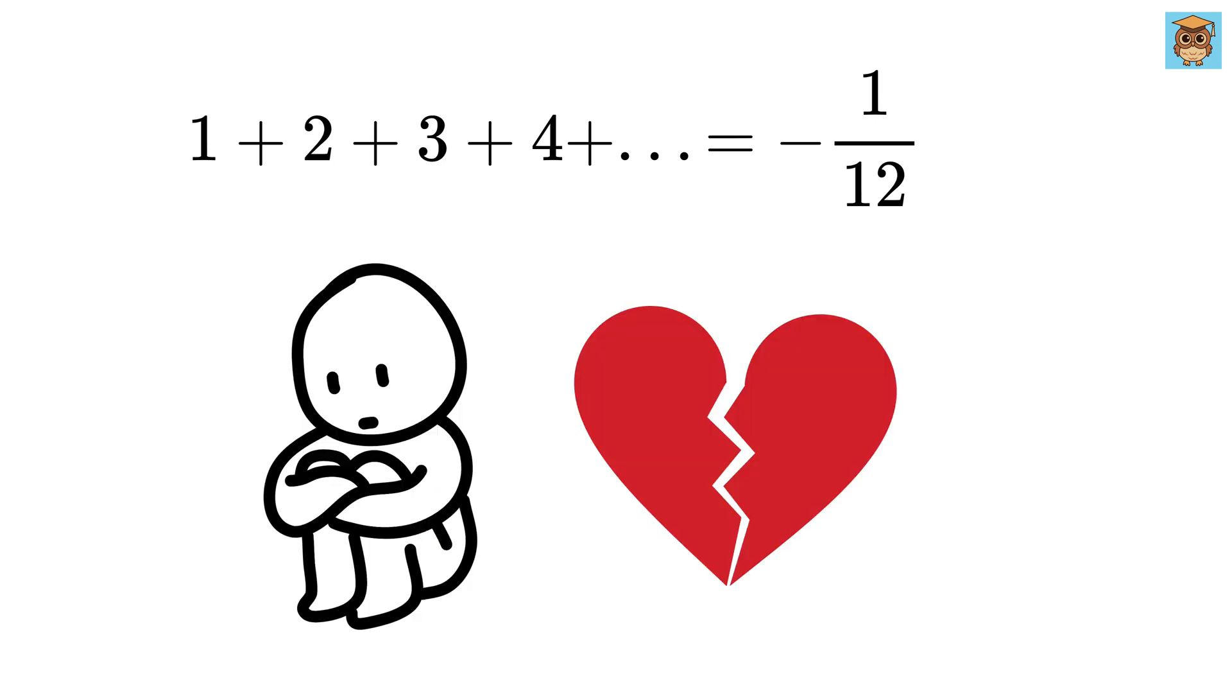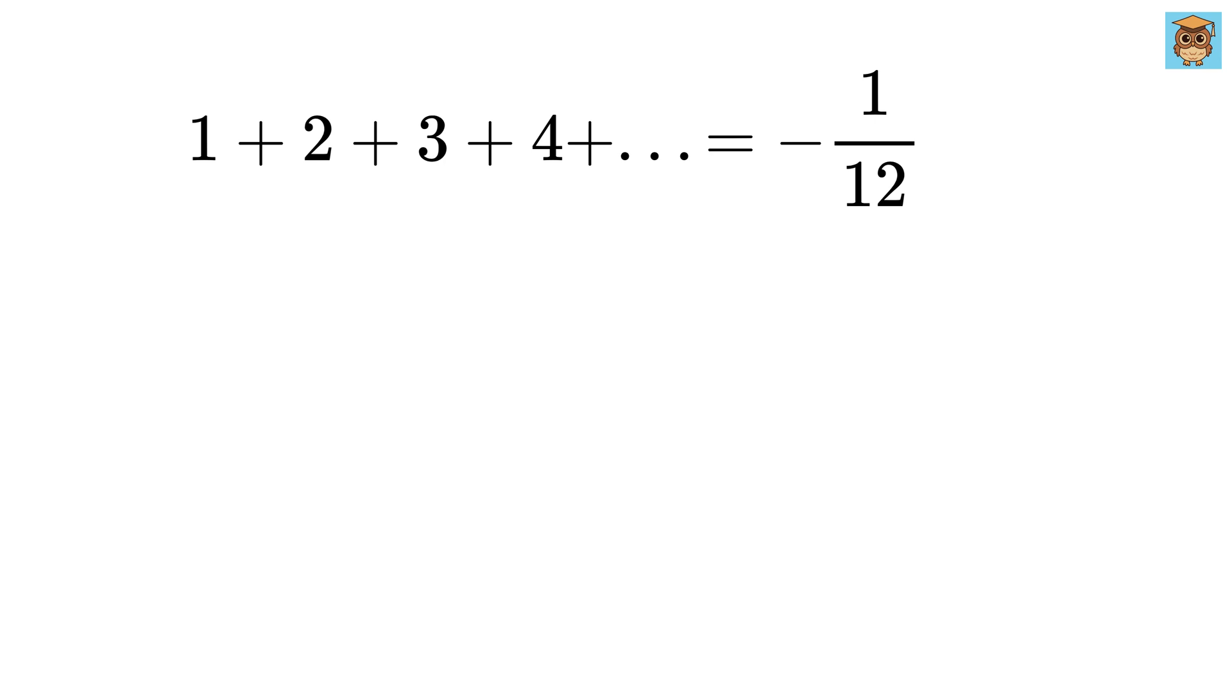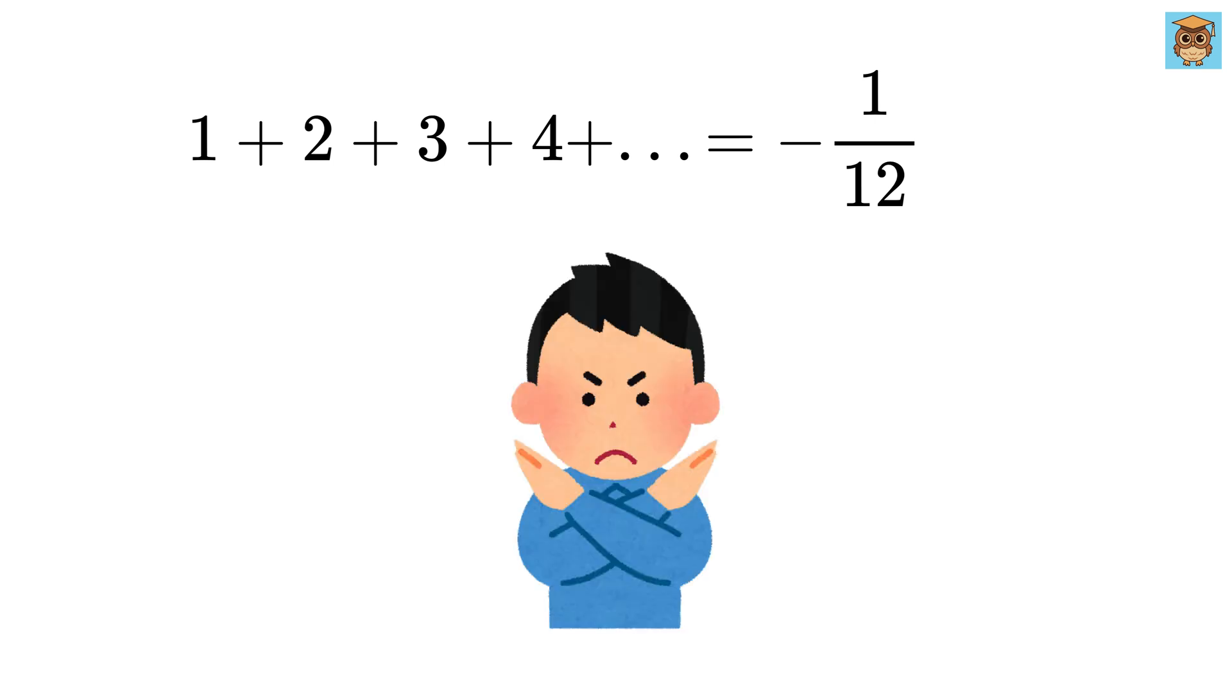Oh, wait. Let me get to the sad part and break your heart. The result is not exactly true in the usual sense. If you keep adding these numbers normally, the sum just grows larger and larger, approaching infinity. The method we described, where we manipulate the infinite series by factoring and rearranging terms, is not a rigorous mathematical proof and is incorrect.